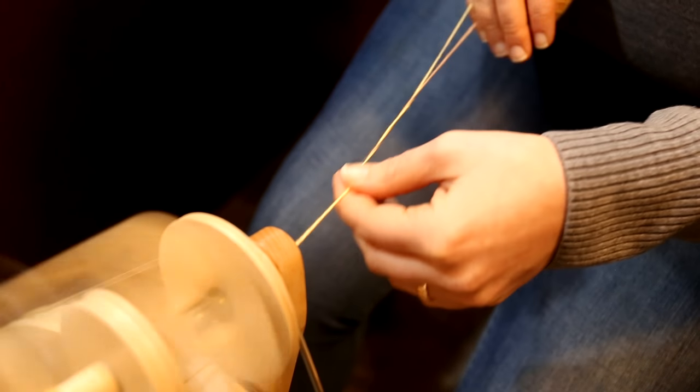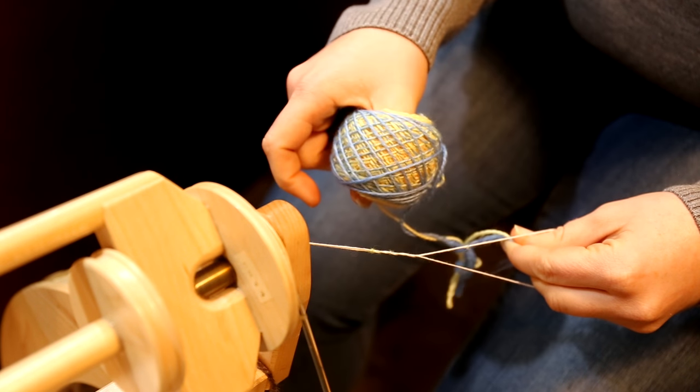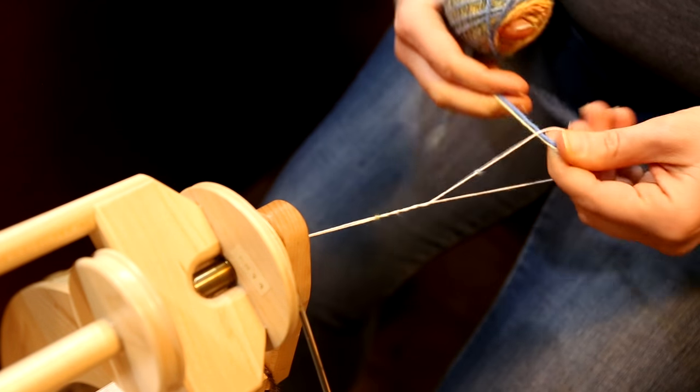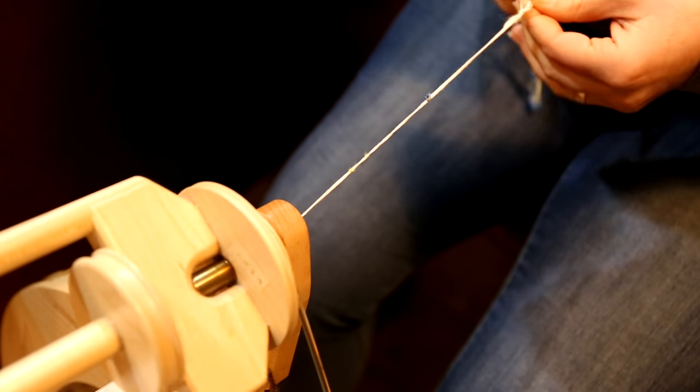And the reason that you need all of that twist is because you're going to ply them together, so you're actually going to make another center pull ball. I tend to wind my two-ply off onto my ball winder and create another center pull ball.